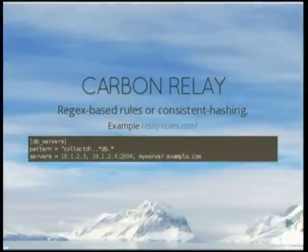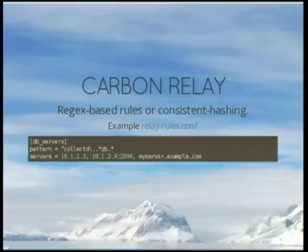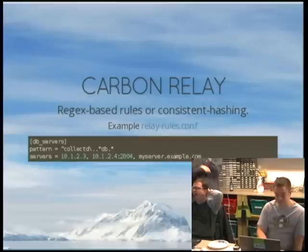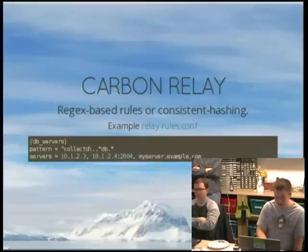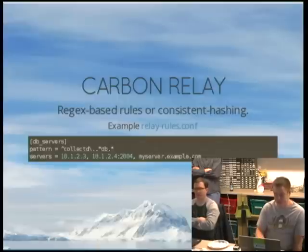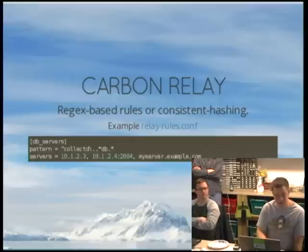Here's an example of the regular expression-based rules that let you specify your Graphite caches — say 10.1.2.3, 10.1.2.4 on port 2004, and myserver.example.com. Via regular expression, you can say: I know how these metrics come in and I want to shard them manually to these hosts. In my experience, I actually just use consistent hashing, because we over-provision our Carbon cache back-end and shove everything into one shared set of caches.